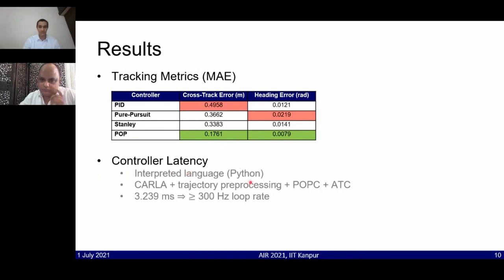Coming to the latency, we have implemented the entire control algorithm in Python, which is an interpreted language, so obviously the values that you can see here are already high. Since we had the simulation engine as well as the trajectory preprocessing pipeline and the lateral and longitudinal controls running in a single machine, the latency came out to be around 3.2 milliseconds, which roughly translates to a control loop of over 300 Hz, and this is very much real-time execution.